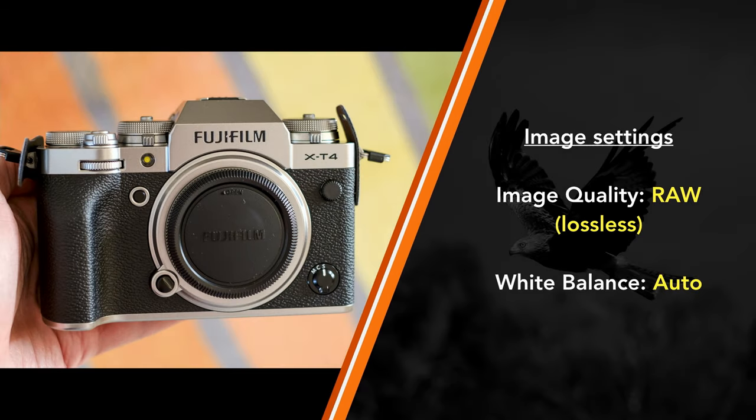Let's begin with some general settings — things about image quality, viewfinder, and a few other things to set up first. Concerning image quality, I always choose RAW for the file type and leave white balance to auto. I find Fujifilm cameras work well in auto mode and I can easily change the white balance in post if I need to.